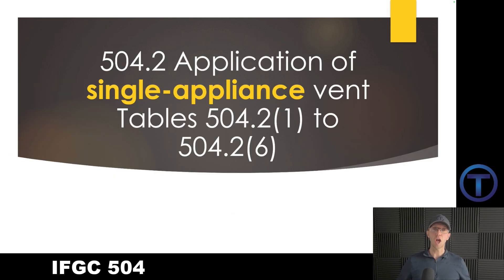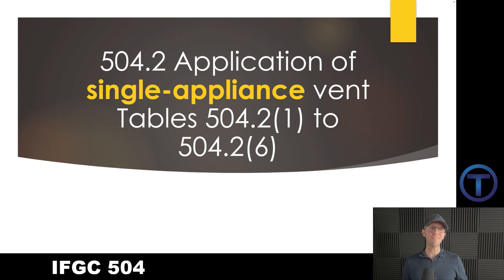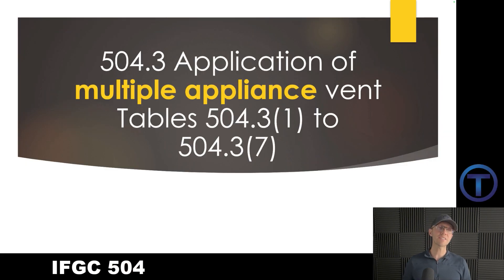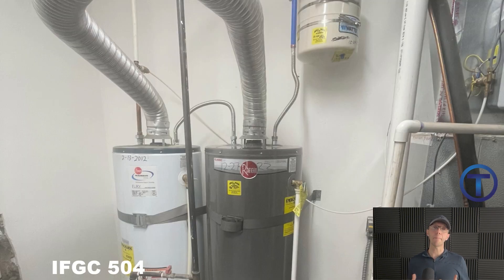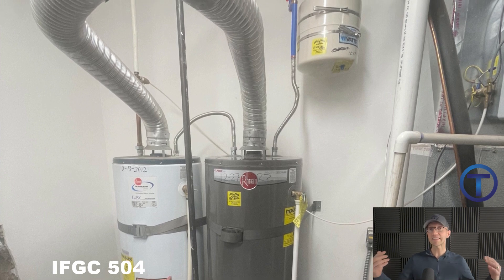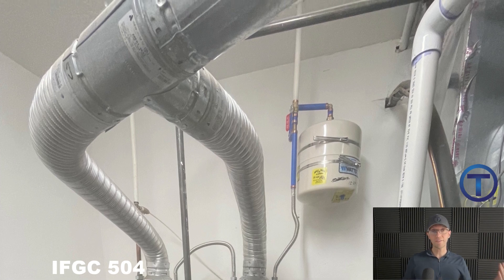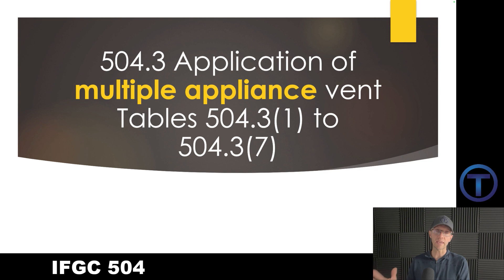There are several sections loaded with tables. Take a minute, flip through your book and notice how many pages are packed with sizing tables. One of those sections is 504.2, which is the application of single appliance vent tables — meaning you have one appliance and one vent for that appliance that goes to the outside. There is another set of tables in 504.3, which is the application of multiple appliance vent tables. This is where we have several appliances, maybe several water heaters coming together on a vent, or a draft vent furnace with a water heater coming together in a common vent.